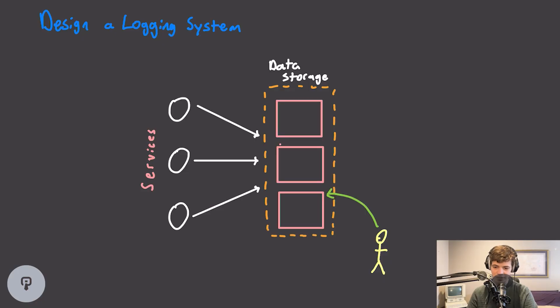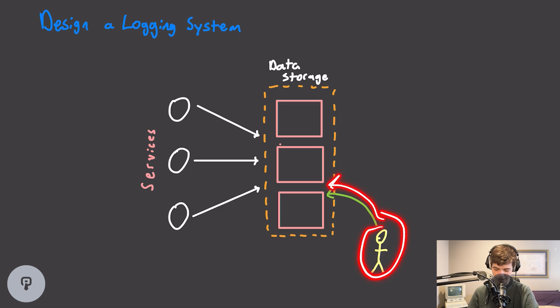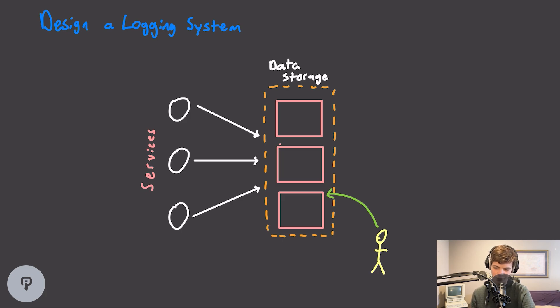In this video we're going to be talking about how to design a logging system. A log system is anything that can take in unstructured log data from a number of services we have configured and store that large quantity of data in such a way that a person can easily query it and get access to historical insights. This is pretty common in large-scale systems where multiple services are producing logs and we need to store that massive quantity of log data in real time.